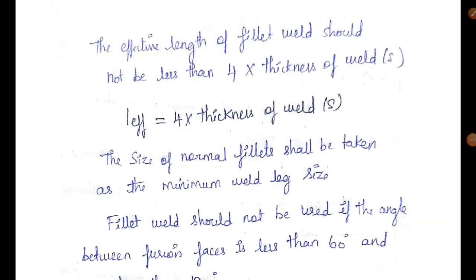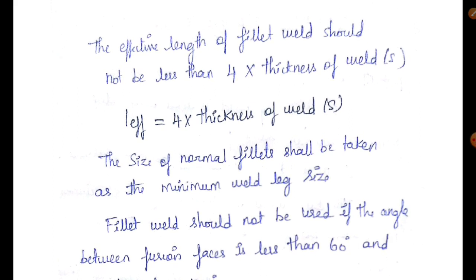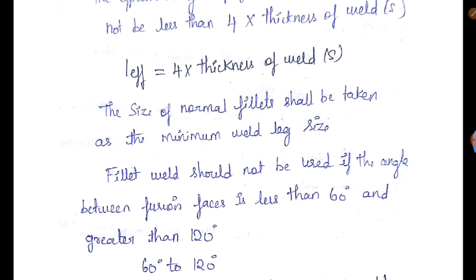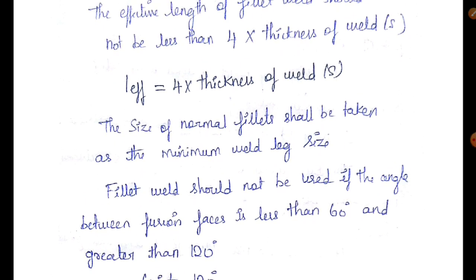Now the specification starts. Fillet weld — effective length of weld. What portion is the effective length? It is the portion where we can add stress and transfer. In the code book, effective length of fillet weld should not be less than 4 times the thickness of weld — that is, L ≥ 4 × S (where S is the size of weld). The size of a normal fillet shall be taken as the minimum weld leg.